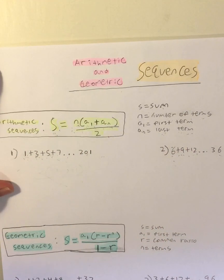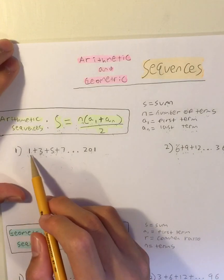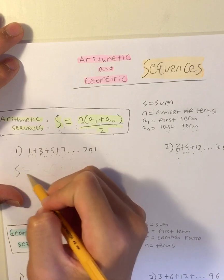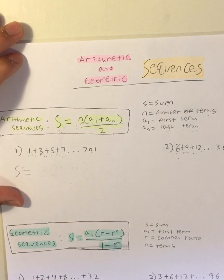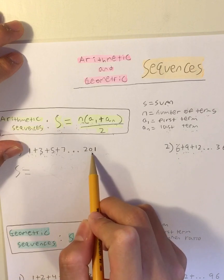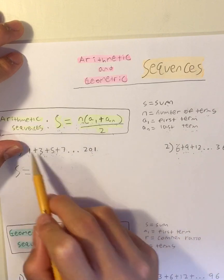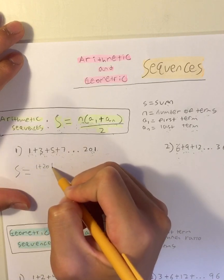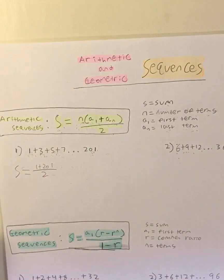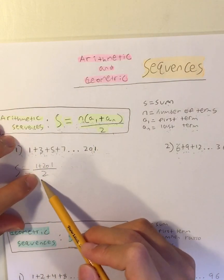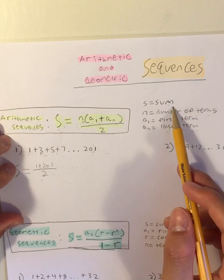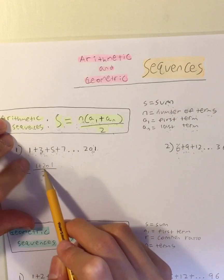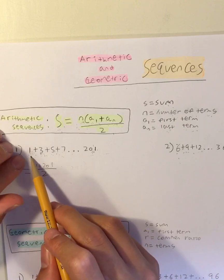Let's apply this equation to this question: 1 plus 3 plus 5 plus 7 all the way up to 201. So what does the sum equal? The sum is equal to the number of terms. To figure that out, you add the first and last numbers — 1 plus 201 — and then divide by the common difference, which is 2. So you add the first term and the last term and divide that by the common difference.